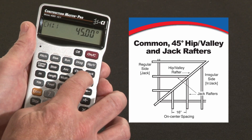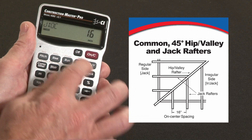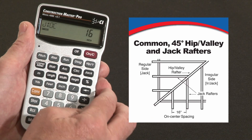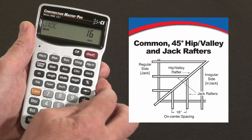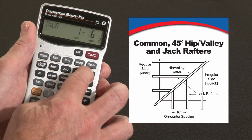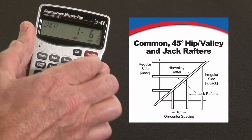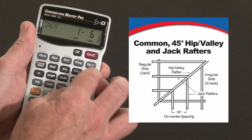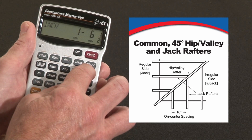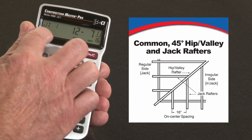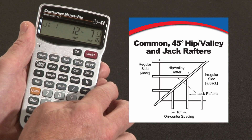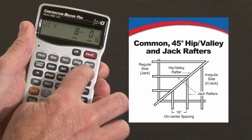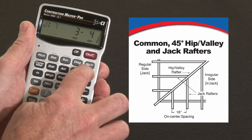Pressing the jack rafter key shows a couple of things. The first press shows that our on-center spacing is stored — the default is 16 inches, which you can change to whatever you want, but for this example that'll work. The next press shows the increment: that's the amount of change in length from one jack to the next. Starting from the common, jack number 1 is going to be 12 foot 7 and 11/16ths. Repeated presses of this key give us the length of each and every jack all the way down to the corner.